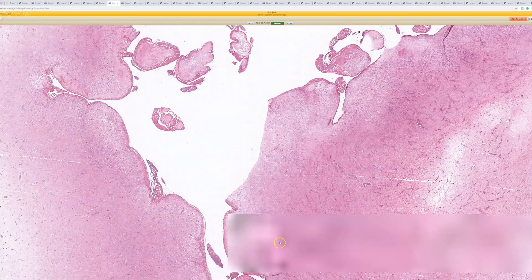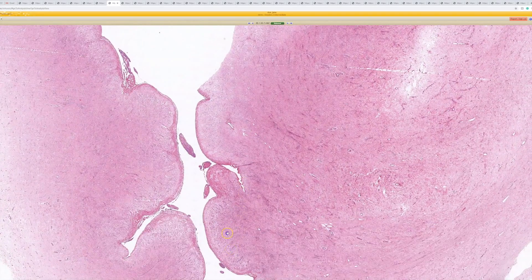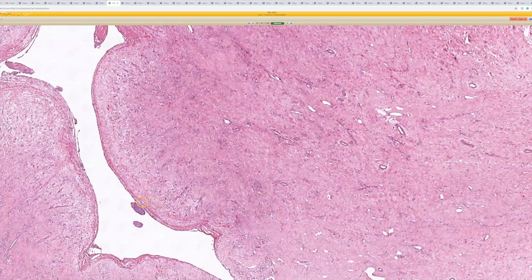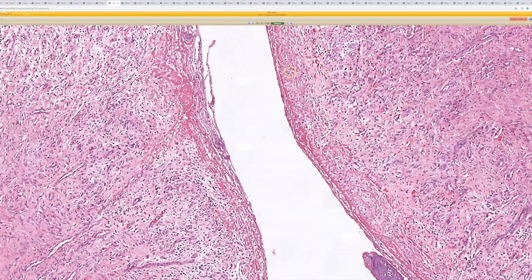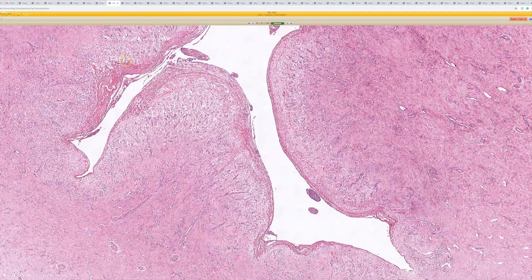Great, that's a good differential. So this is a very robust example of reactive change in a ganglion cyst in this case. And again there's no lining here, right, it's just granulation tissue and then all of a sudden you got some fibrin and empty space. Good job.